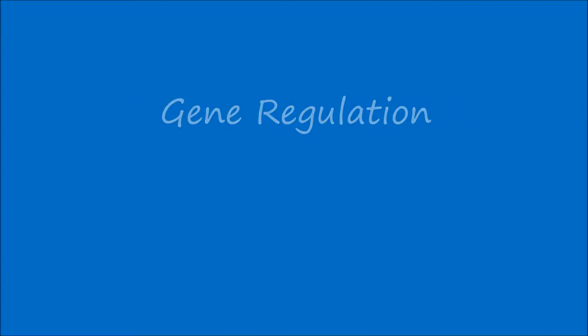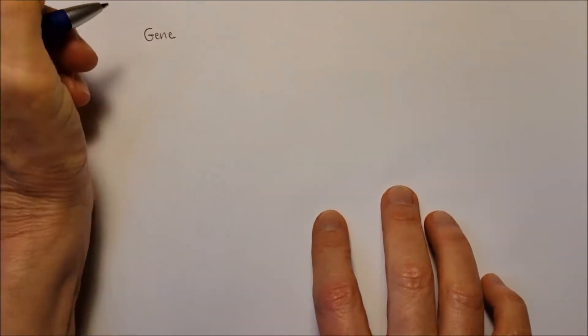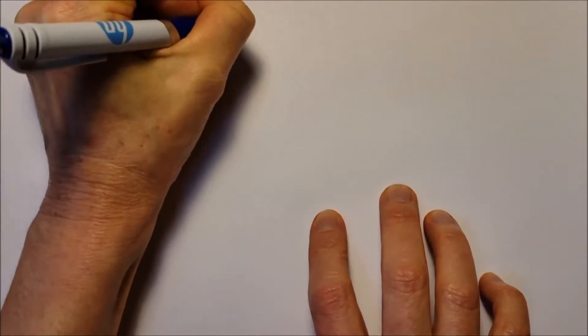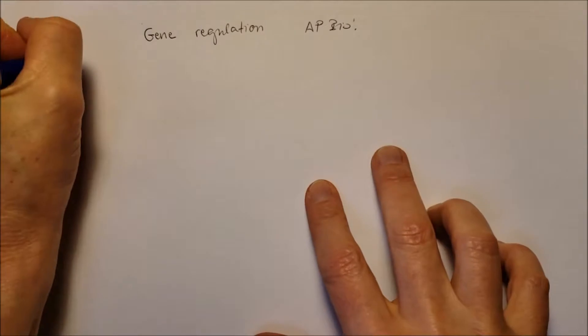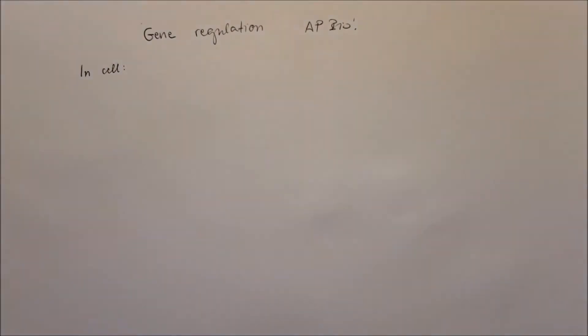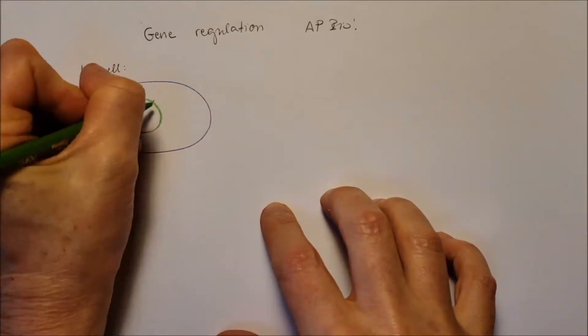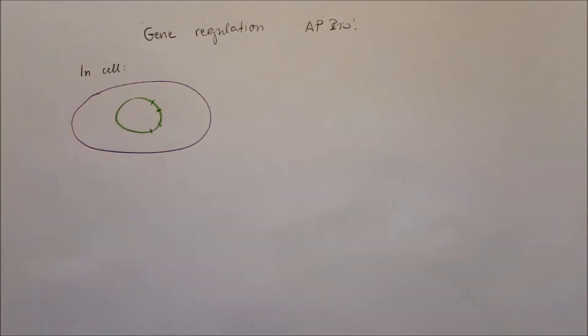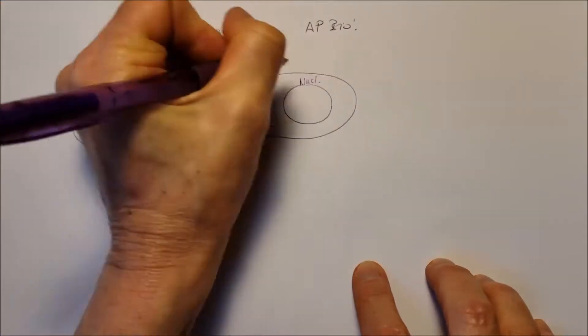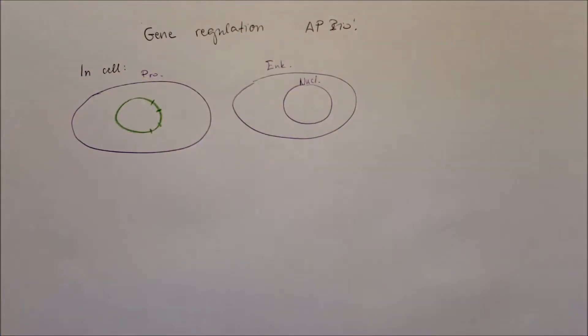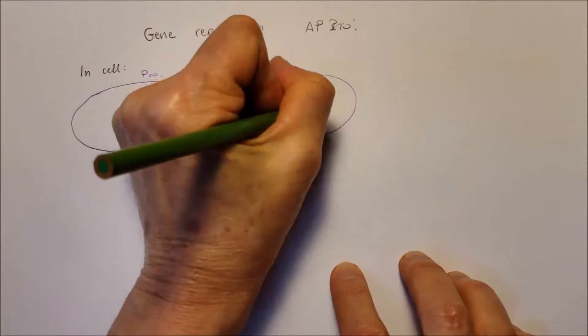Gene regulation, regulation of gene expression. This is for the AP biology class and we distinguish two different cells, the prokaryotes where the DNA is in the cytoplasm in the nucleic region and it's circular, and in eukaryotes when the nucleus contains the genetic material and they are linear.